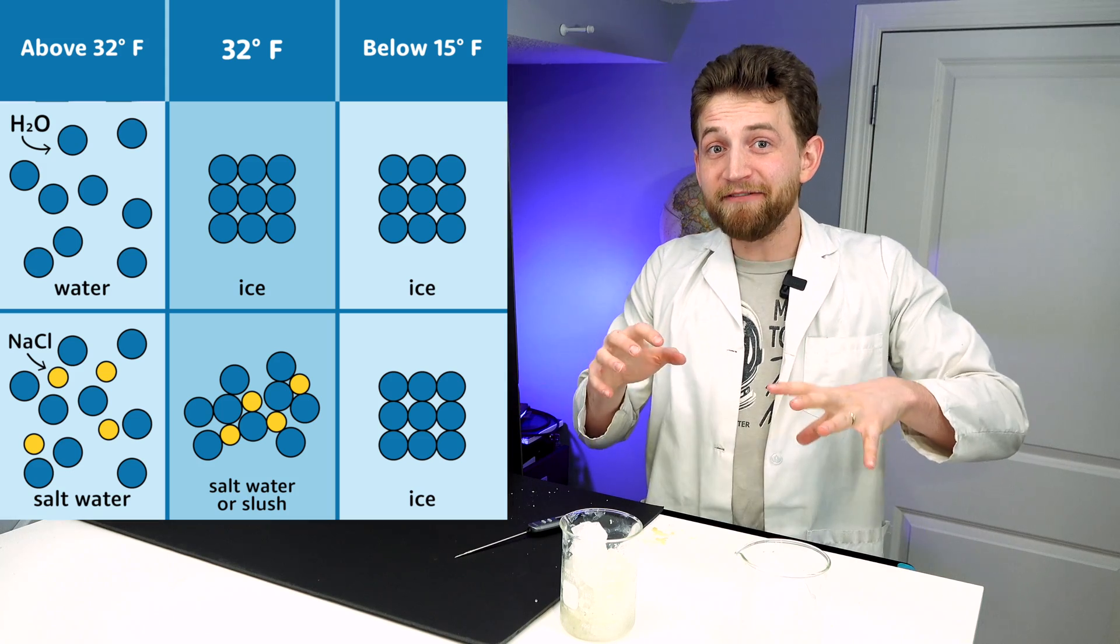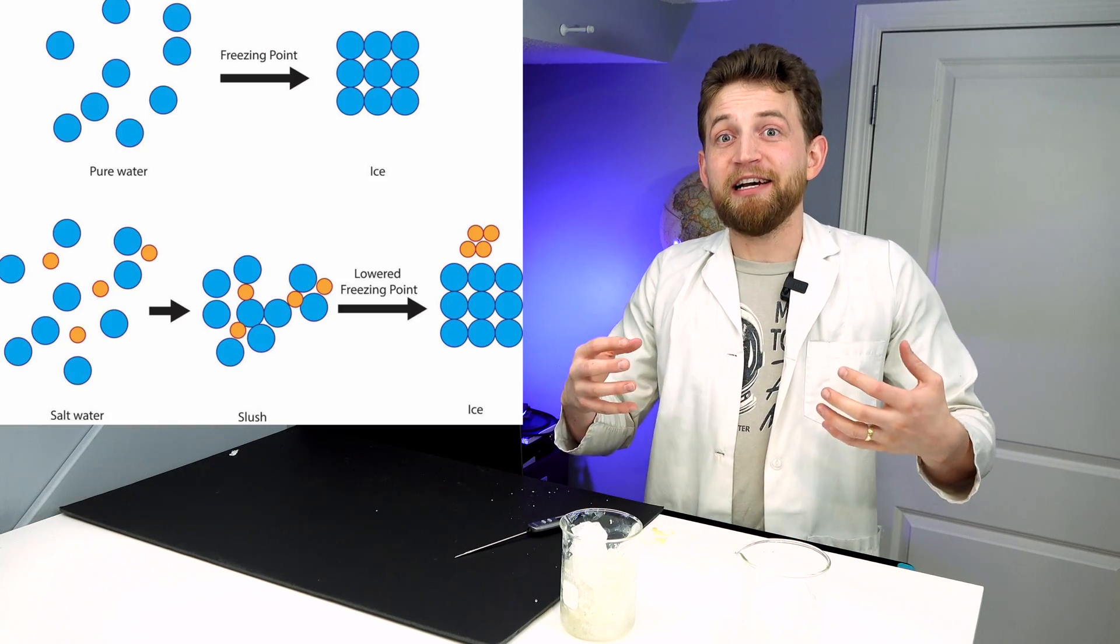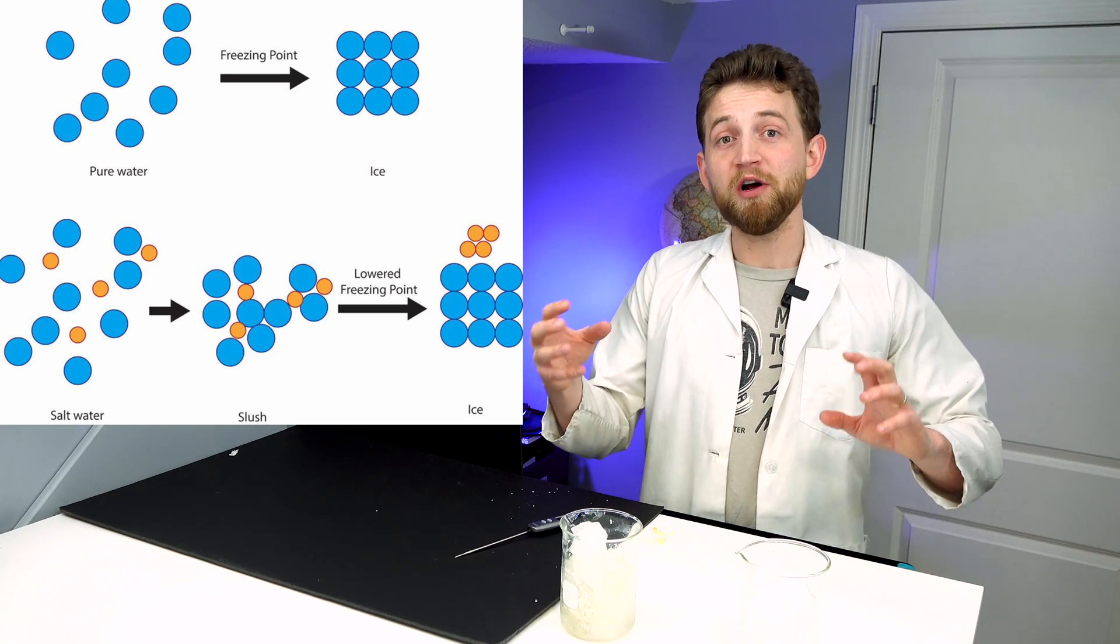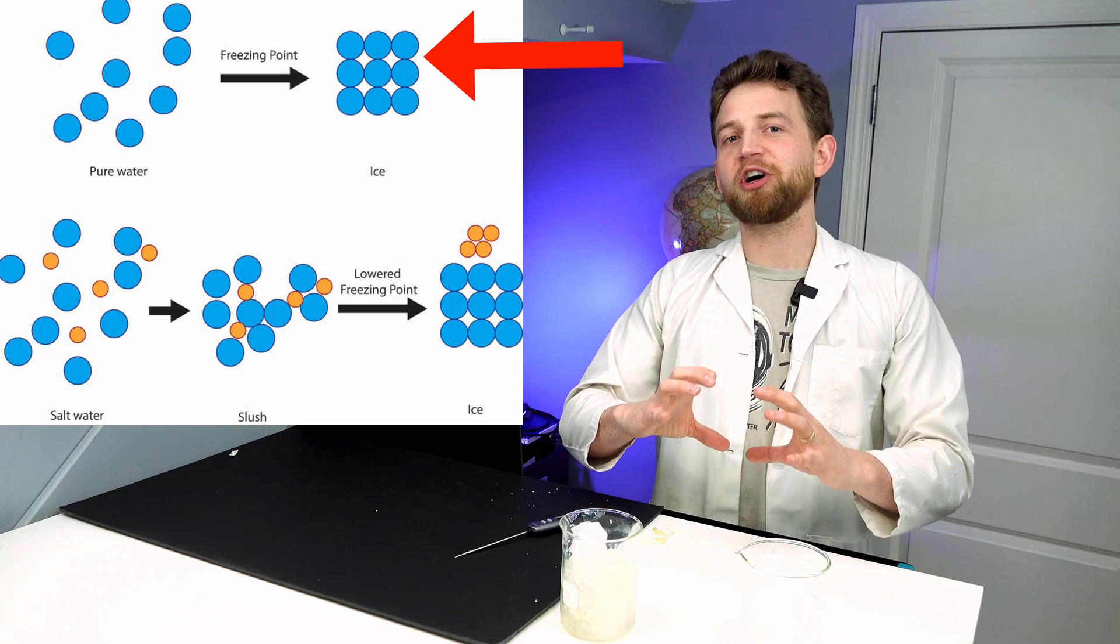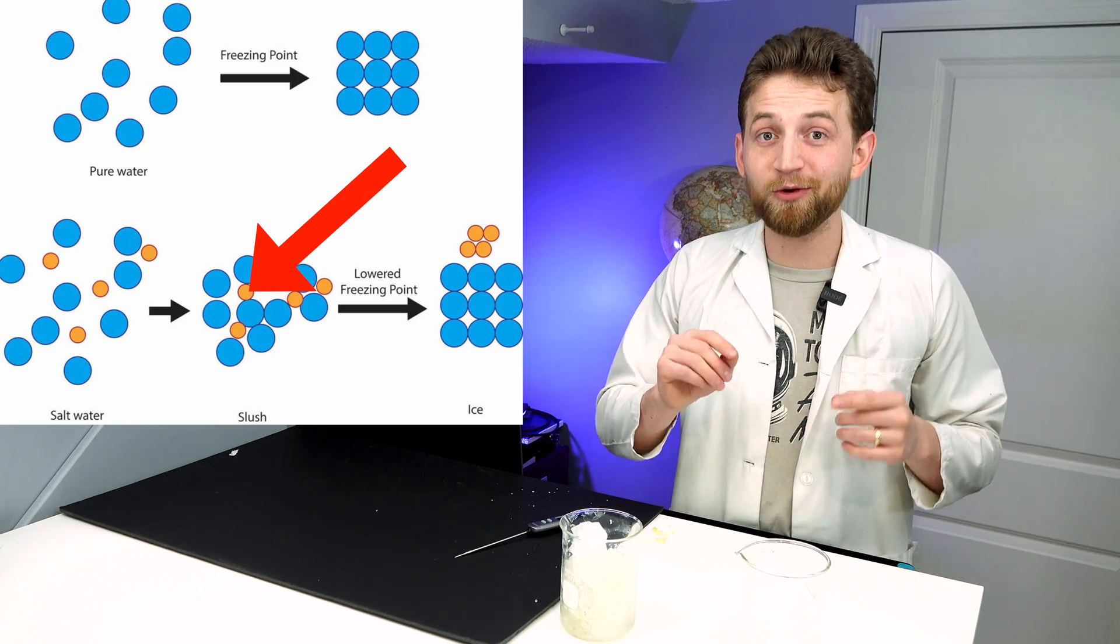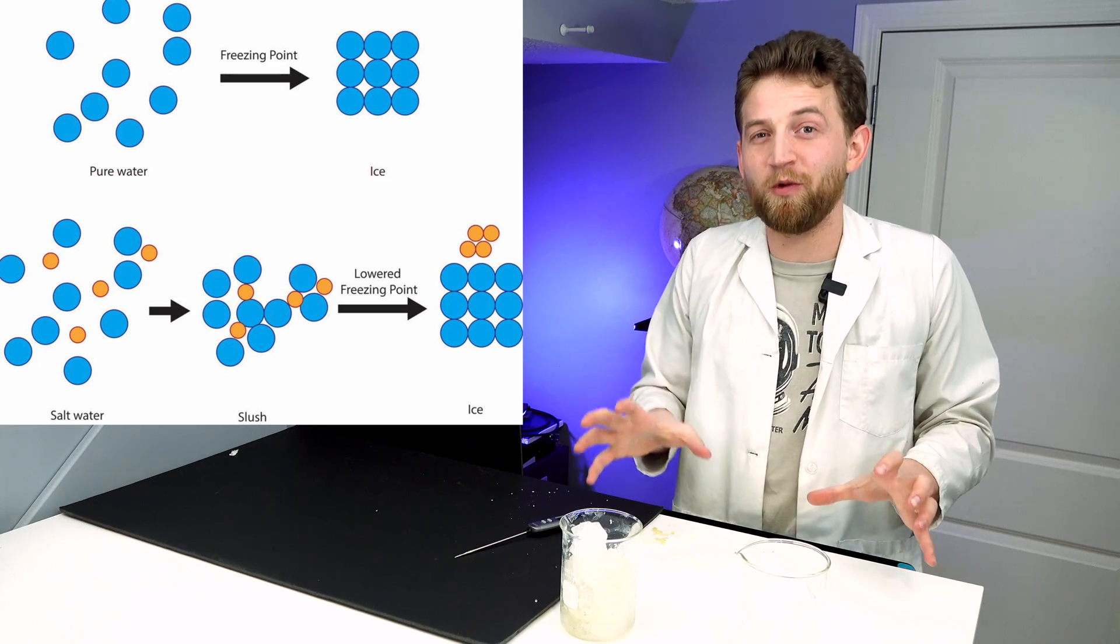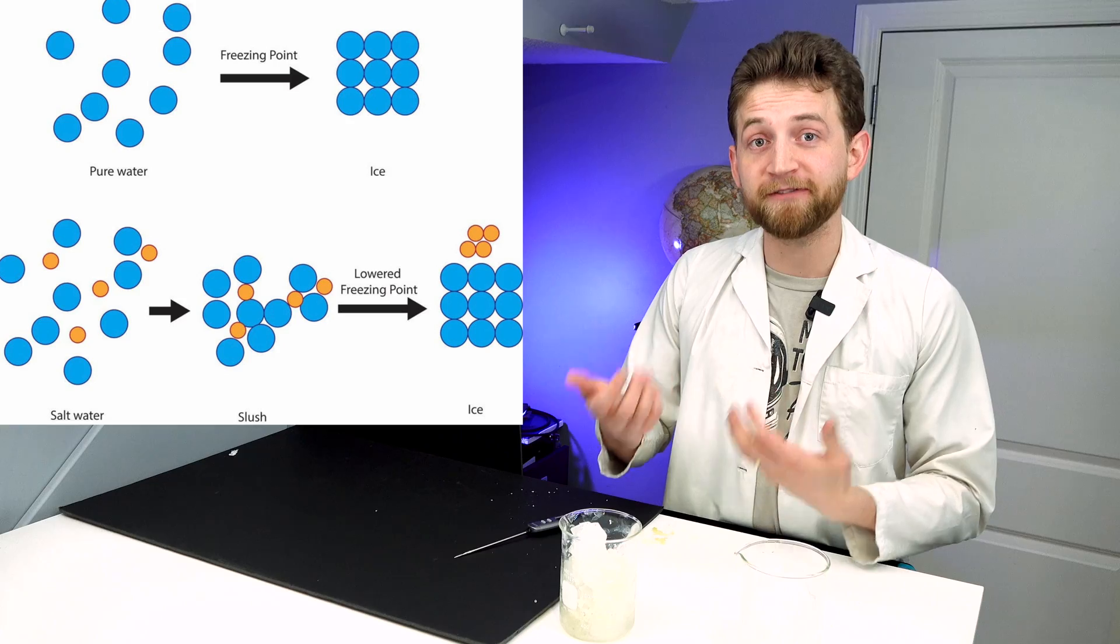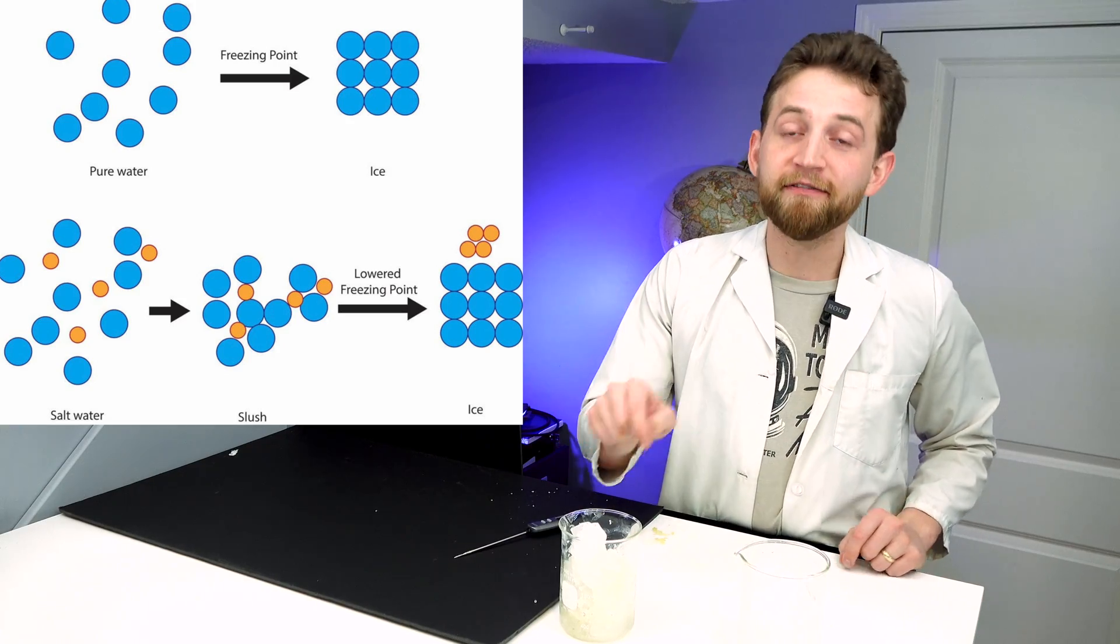And those ions kind of get in the way of the ice structures from freezing together, because typically H2O, water, will crystallize into a very stable structure. But that stable structure gets inhibited by those ions that are just kind of getting in the way and being super annoying, so it makes it harder for the water to freeze with the presence of sodium chloride.